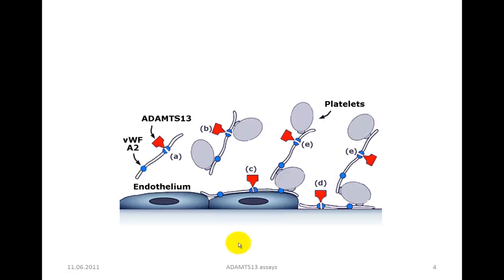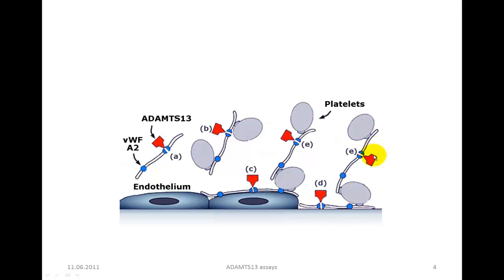The next slide shows a schematic drawing of ADAMTS-13 function and interaction with von Willebrand factor and other players in the coagulation system, the endothelium and the platelets. Here you see von Willebrand factor, the A2 domain, and ADAMTS-13 cleaving in the A2 domain. You see that the von Willebrand factor molecule mediates interaction between platelets and thereby promotes clotting, and when cleavage in the A2 domain occurs, this platelet interaction is disturbed. The same happens when platelets are bound to von Willebrand factor that is bound to the endothelial surface. ADAMTS-13 interacts in an inhibitory manner, and von Willebrand factor bound to extracellular matrix is also affected by ADAMTS-13, again with a negative influence on platelet-platelet interaction.